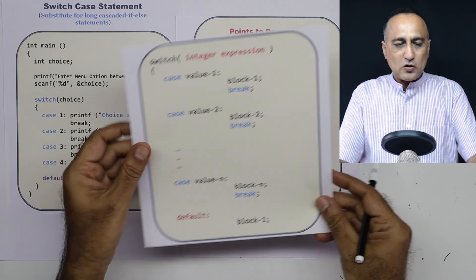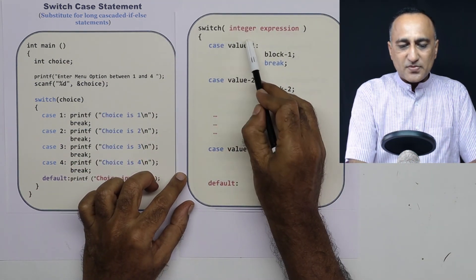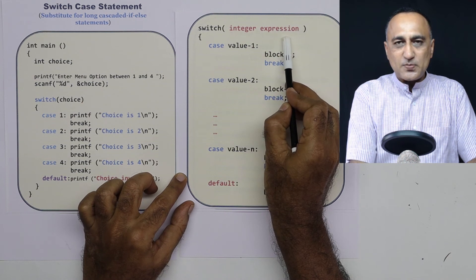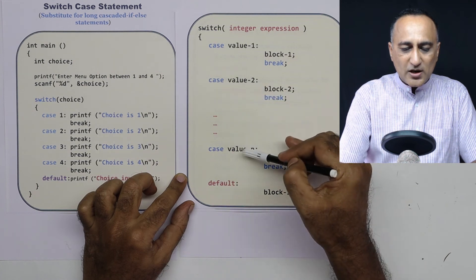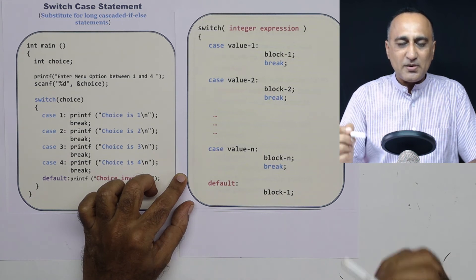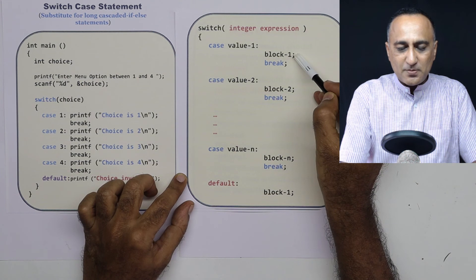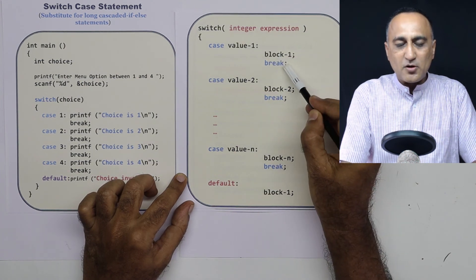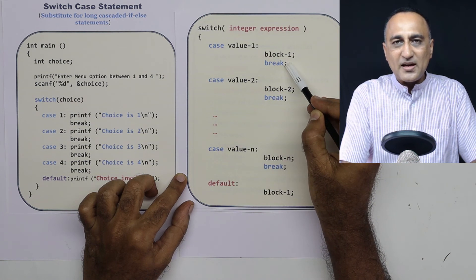The syntax of a switch case is like this: switch, this has to be an integer expression or the evaluation should lead to an integer value. All of this value 1 till value n should evaluate to an integer constant. Even a character ultimately evaluates to an integer constant. You can have number of statements, you don't require the curly brace here because you got the break. So once the statements are executed, the break can hit.